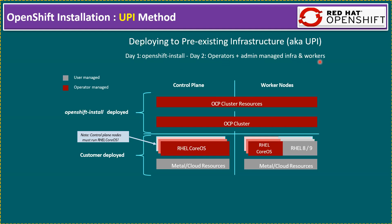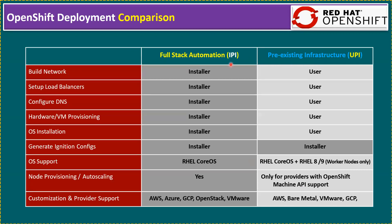Now let's look at the OpenShift deployment comparison — full stack automation versus pre-existing automation. For IPI: building the network is completely automatic; setting up the load balancer is automatic (no need for additional HAProxy); DNS is also configured automatically; hardware/VM provisioning is automatic; OS installation is handled by the OpenShift installer; generating ignition configs is handled by the installer; the OS supported is only RHEL CoreOS; and node provisioning with auto-scaling is supported. Customization and vendor provider support is available for public cloud vendors.